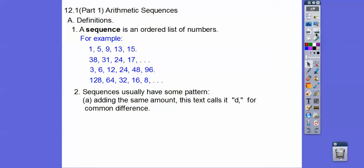Sequences usually have some pattern — either adding the same amount. If you're adding, this text likes to call it D for common difference. What they do is right number minus left number: so 15 minus 13, or 13 minus 9, or 9 minus 5 — they're all the same. 17 minus 24 — righty minus lefty, I call it — is negative 7. 24 minus 31 is negative 7, and 31 minus 38 is negative 7.